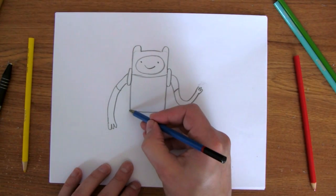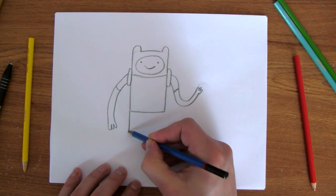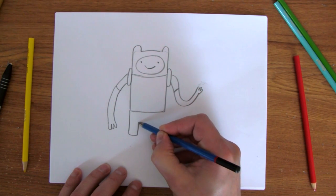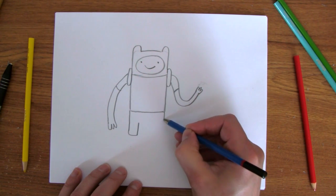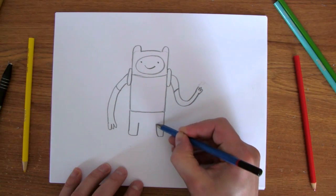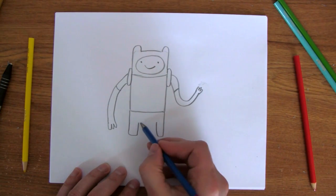Now his pants go like this. Really skinny legs. Another one on this side. And then we just draw a line across.